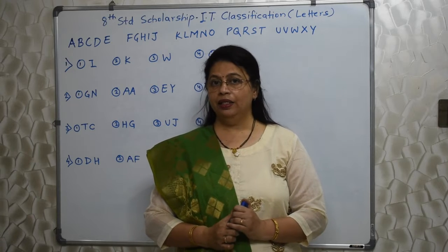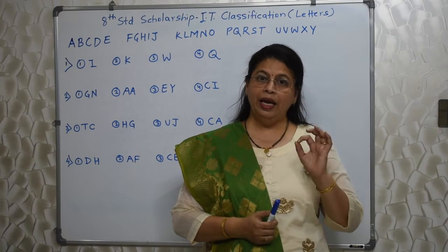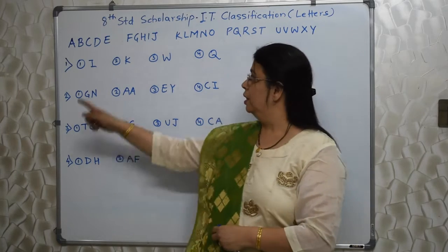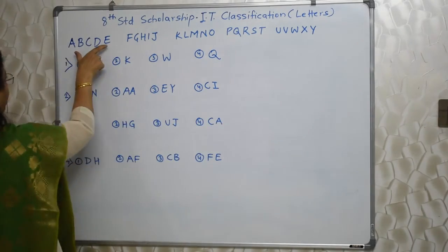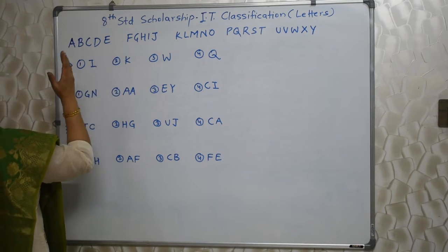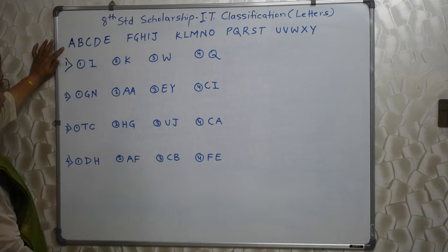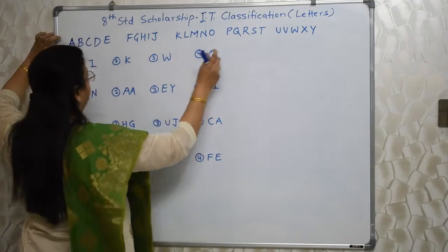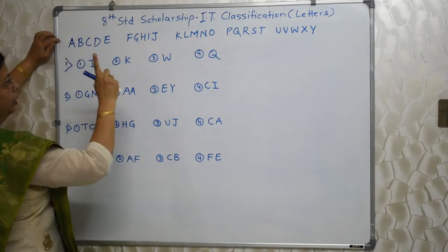The name of the topic is Classification. We will be concentrating on letters today. Students, whenever there is a question on letters, 99.9% we have to assign a numerical value to those letters. There will be 5-5 letters from A to Y. Z is not there. In case you have appeared for the scholarship in 5th Standard, this is not new to you. But in case students are giving scholarship for the first time in 8th Standard, for them I would like to mention, see A to Y, numbers are divided into 5-5 groups. This will be printed in the question paper.